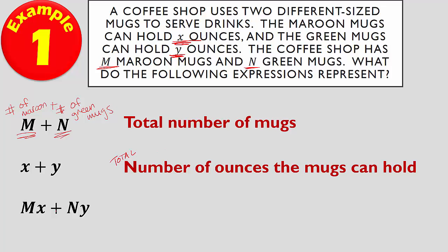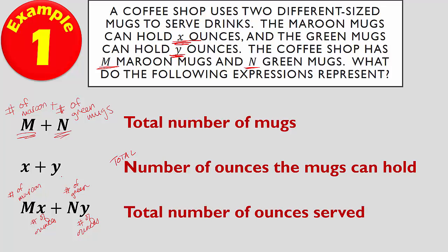Then we have MX plus NY. We're kind of combining the two. This is the total number of maroon mugs, total number of green mugs. This is number of maroon and number of ounces, number of green and number of ounces. That's number of ounces for the maroon mugs and number of ounces for the green mugs. So if you take all that together, that would be the total number of ounces served.